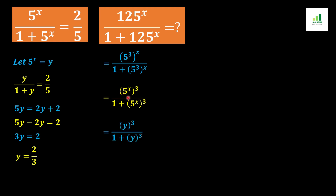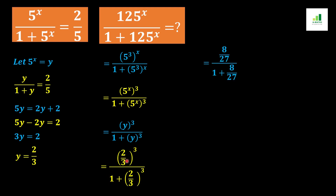We replace 5^x with y. Since y equals 2 over 3, we substitute to get (2/3)^3 over (1 + (2/3)^3).